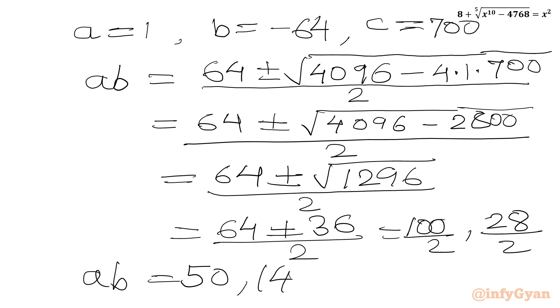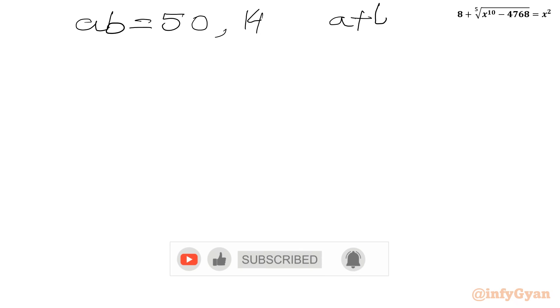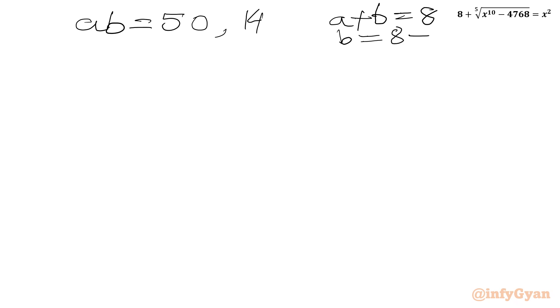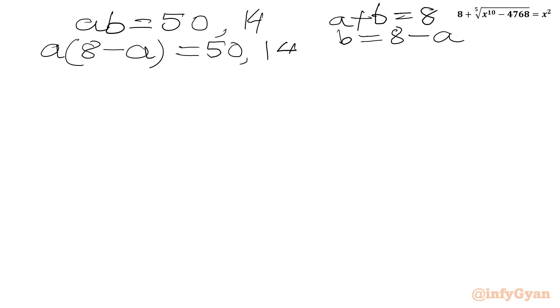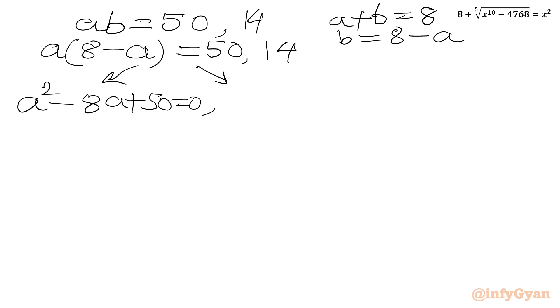Using equation 1: a plus b equals 8, so b equals 8 minus a. Substituting into ab equals 50 and ab equals 14: a times 8 minus a equals 50 gives a squared minus 8a plus 50 equals 0, and a times 8 minus a equals 14 gives a squared minus 8a plus 14 equals 0.